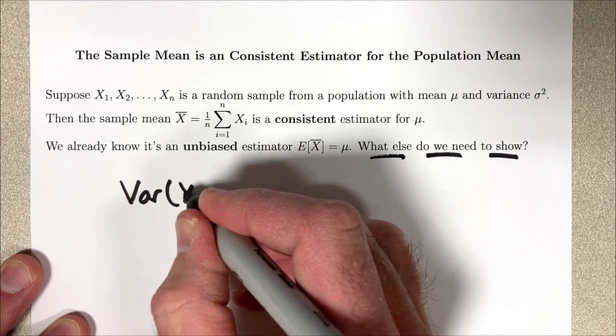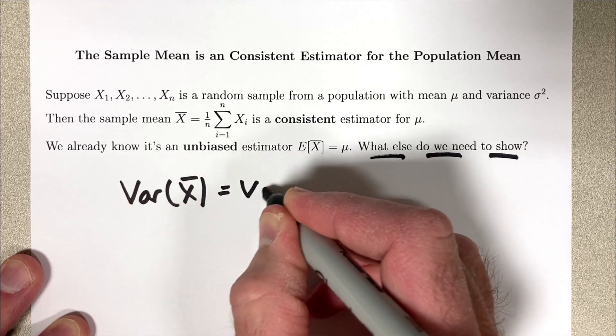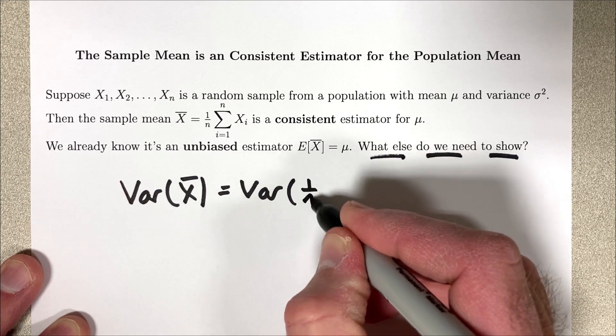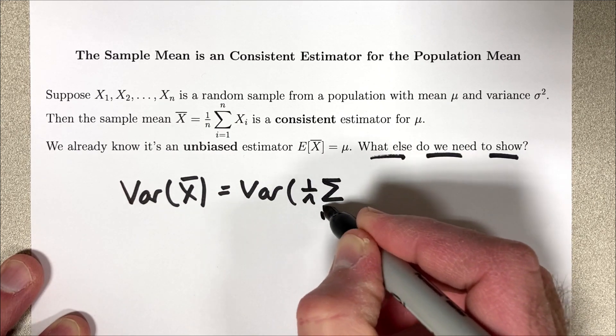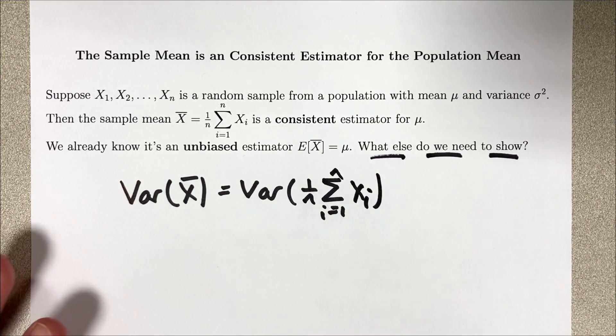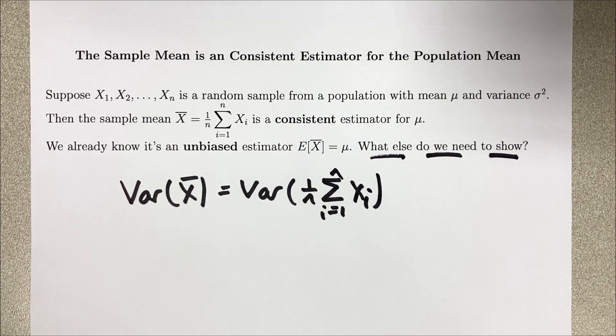The variance of x-bar can be written as the variance of 1 over n times the summation i goes from 1 to n of xi. Now the variance operator is not a linear operator, unlike the expected value operator. However, it still has some nice properties.